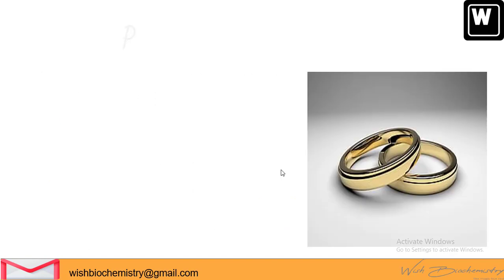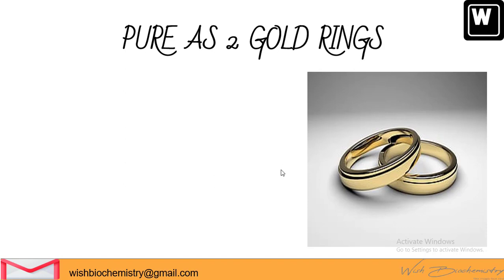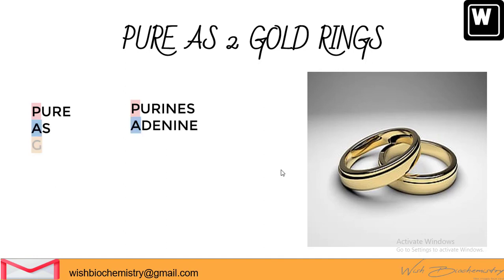Purines can be remembered as 'Pure as two gold rings.' Pure stands for purines, A of 'as' is for adenine, and G of 'gold' is for guanine. Two represents the fact that there are two purine bases, and also represents the double rings of the purines.